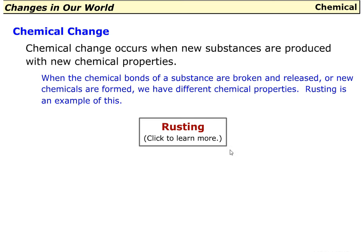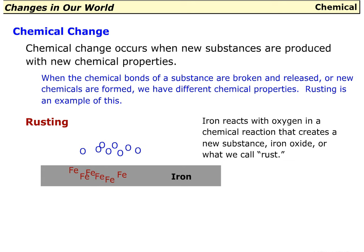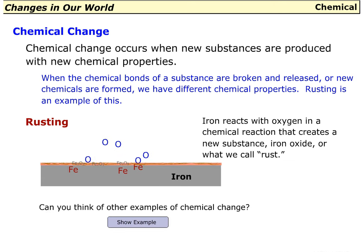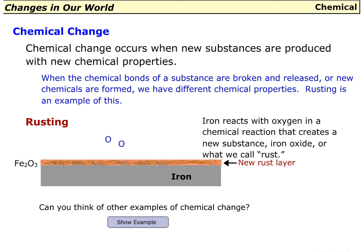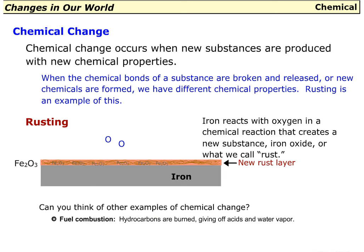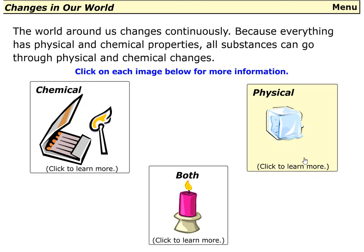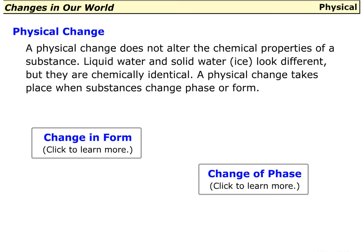When chemical bonds are broken or new chemicals are formed, we have different chemical properties. Rusting is an example: iron reacts with oxygen in a chemical reaction that creates a new substance, iron oxide, or what we call rust. Can you think of other examples of chemical change? One example is fuel combustion — hydrocarbons are burned, giving off acids and water vapor.